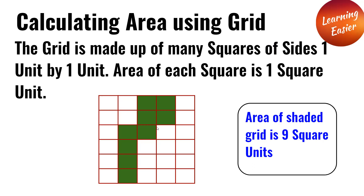Here, the shaded part is 1, 2, 3, 4, 5, 6, 7, 8, 9. So the shaded part has an area of 9 square units.